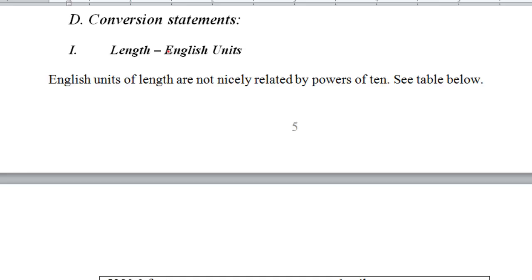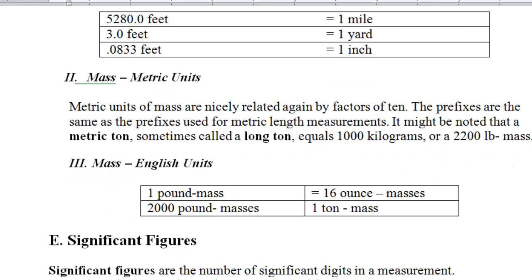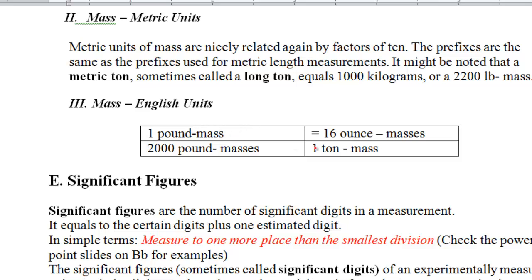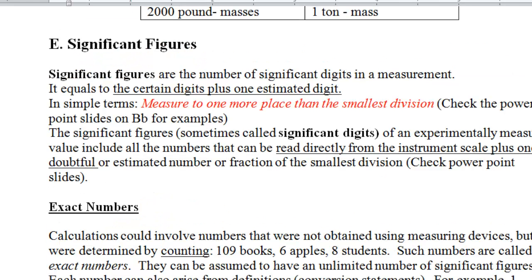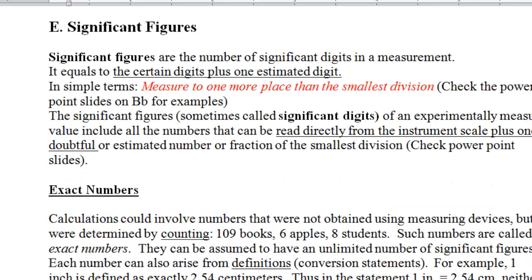A conversion statement is a relation between two units. Those units could be within the same system — English to English or metric to metric — or they could be a relation between an English unit and a metric unit. Here are some examples within the English system: the relation between mile and foot, yard and foot, and foot and inches for length, and between pound and ounce and pound and ton for mass. In lesson number 3, we'll talk more about using conversion statements as conversion factors in calculations.